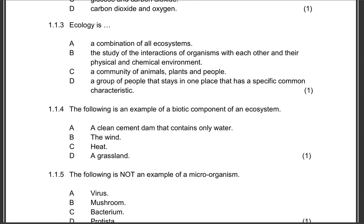Question 1.1.3: Ecology is what? Is it a combination of all ecosystems, the study of the interactions of organisms with each other in their physical and chemical environment, a community of animals, plants, and people, or a group of people that stay in one place? Ecology, from the word 'logi', tells us that's the study of something. So the correct answer will be B. That is definitely the study of interactions of organisms with each other. So living organisms interact with each other, and also they interact with their environment. A plant will interact with other animals and also with the environment - water, soil - in order for it to grow and receive nutrients.